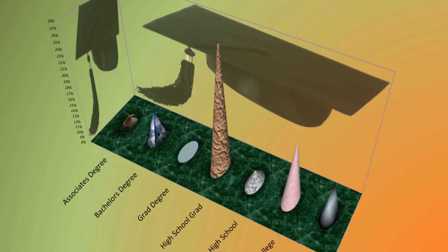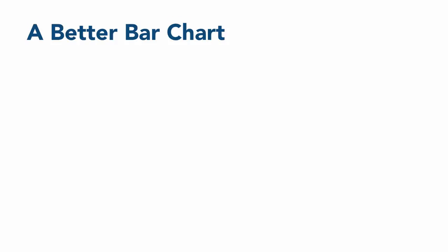A better version of this chart — and you'd have to work hard to make it worse — might look like this. This chart has several advantages. The flat 2D layout is much easier to read. There are no distracting colors. By laying the bars out horizontally, it's much easier to read the labels. The bars are in a logical order by level of education. The scale starts at zero and has a reasonable number of reference lines. It's extremely easy to see which groups are higher and which are lower. The first bar chart was a lot better at grabbing your attention, but the second one is a lot better at informing — which, after all, is the purpose of statistical graphics.